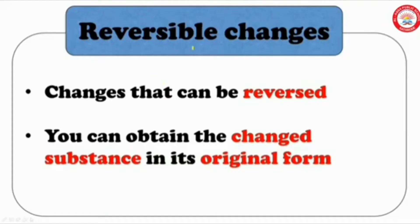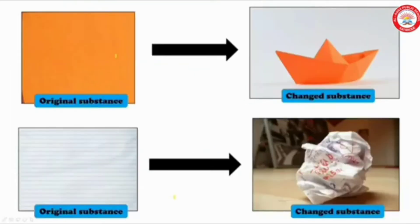Let us discuss about reversible changes. Changes that can be reversed — you can obtain the changed substances in their original form. For example, take a piece of paper and fold it.